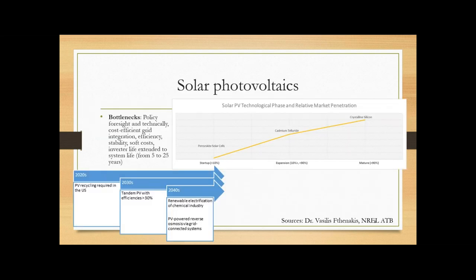Another important graph that I want to include is the wind energy levelized cost of energy by level of investment. So these are predictions for what can we expect the price of wind energy to be considering differing levels of research and development investment. So business as usual, today's R&D you can see has the highest LCOE, whereas medium and high R&D results in a much lower levelized cost of energy. Similar for solar photovoltaics, I've broken down into this S-curve where we have crystalline silicon as the primary technology comprising over 90%. Cadmium telluride and perhaps gallium arsenide are in the middle. And then perovskite solar cells are the current startup tech. The bottlenecks currently are the need for cost efficient grid integration, efficiency, stability, and the need to extend inverter life. And then the timeline so far is PV recycling in the US will be required in the 2020s. This is particularly important as we see end of life PV modules near their end of life. 2030s, we can see an increase in efficiency above 30%, especially with tandem solar cells. And then into the 2040s, renewable electrification of the chemical industry as well as PV powered reverse osmosis desalination systems.